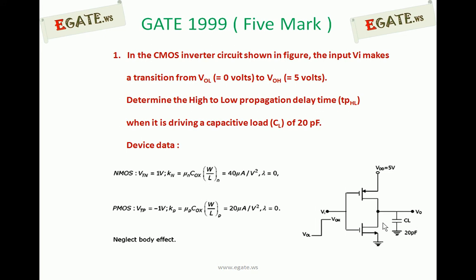Look at the diagram. The diagram shows a CMOS inverter, and the input given is changing from VOL to VOH. In the CMOS inverter circuit shown in the figure, the input VI makes a transition from VOL to VOH, where VOL is 0V and VOH is 5V. Determine the high-to-low propagation delay time TPHL when it is driving a load capacitance of 20 pF.